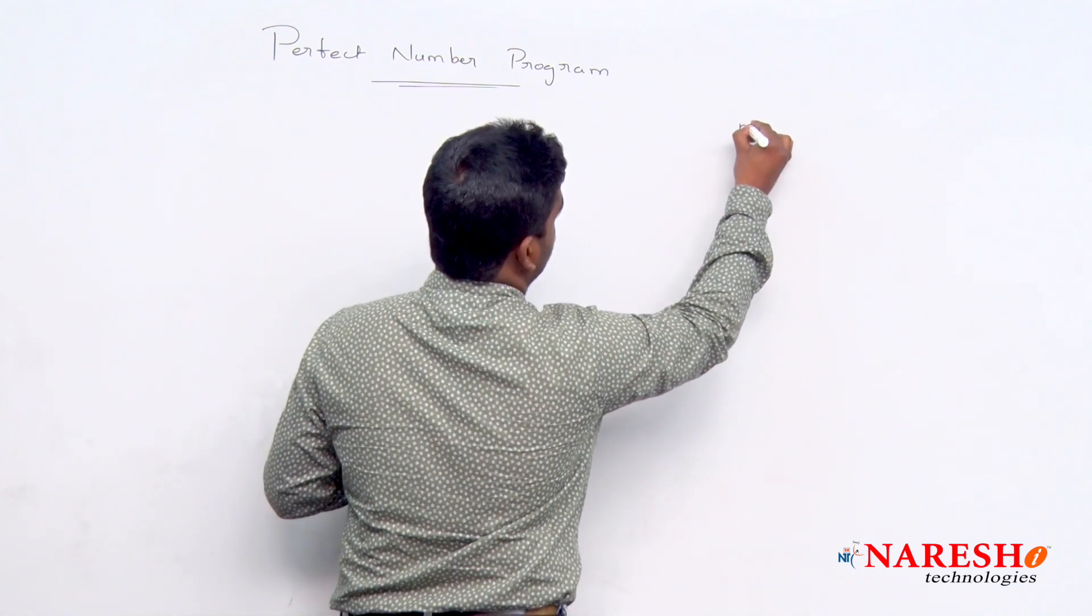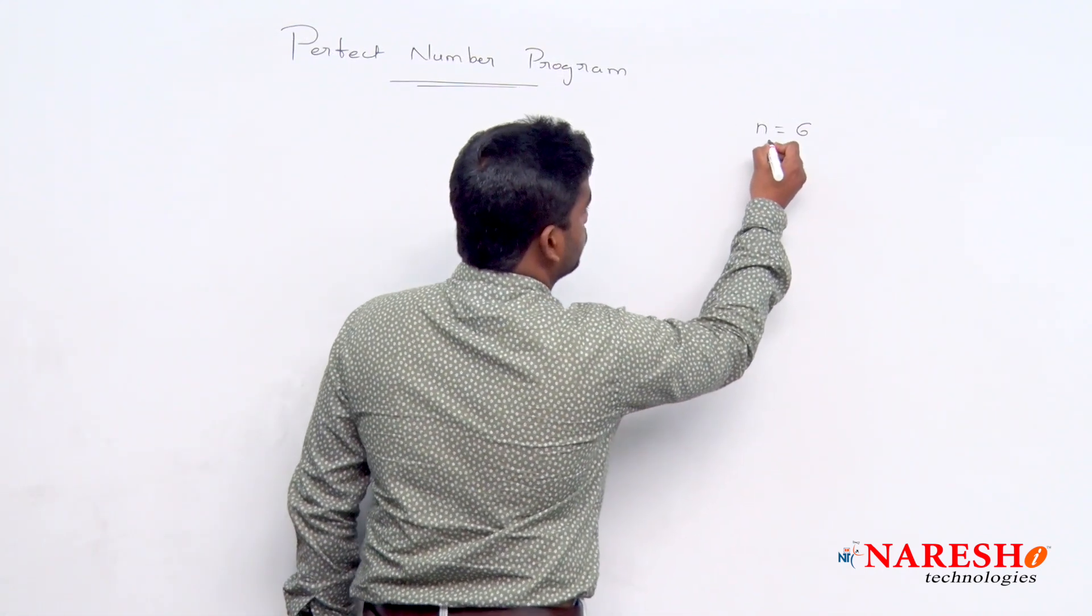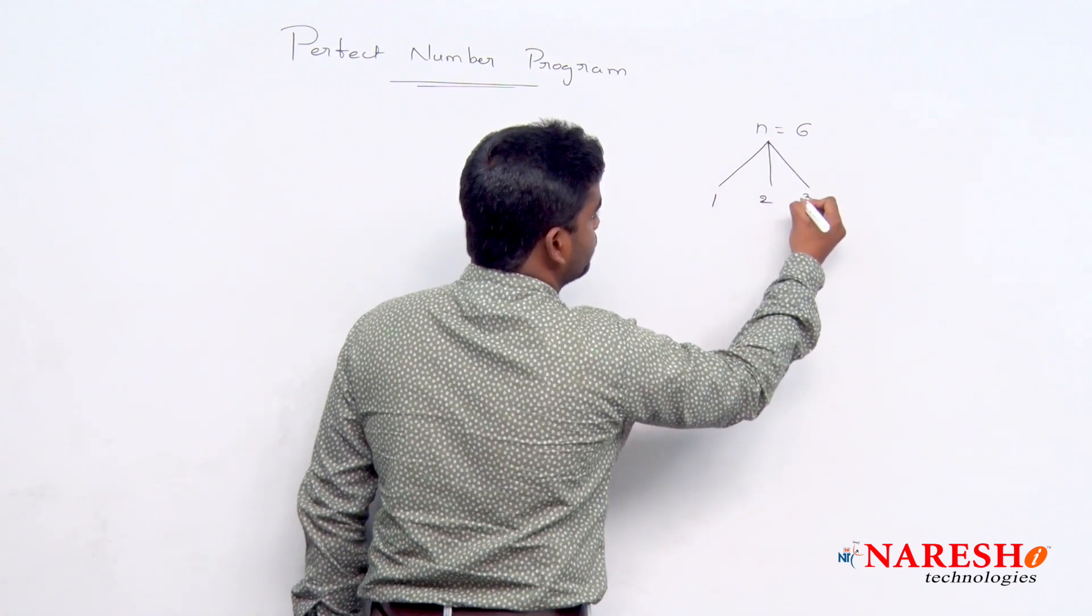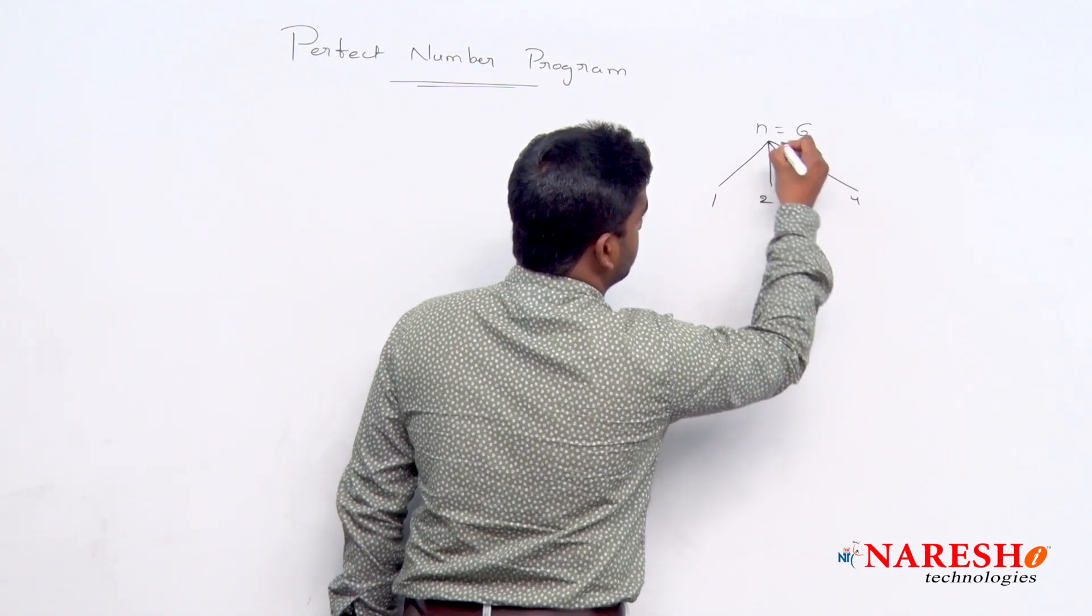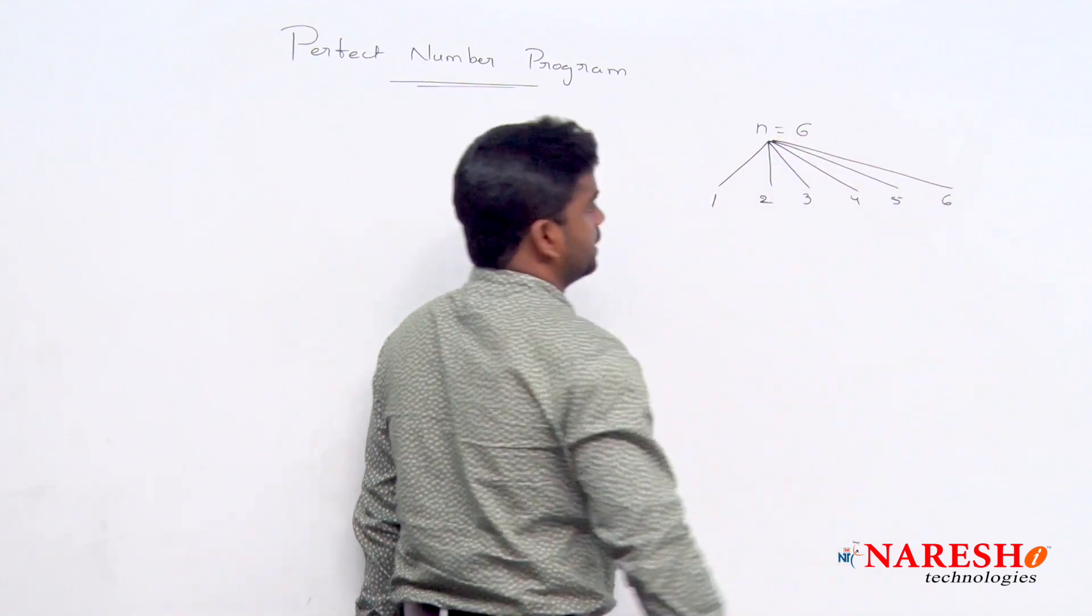First, here I am taking one number, 6. Now we need to find out the factors: 1 is a factor or not, 2 is a factor or not, 3 is a factor or not, 4 is a factor or not, 5 is a factor or not, and 6 is a factor or not.